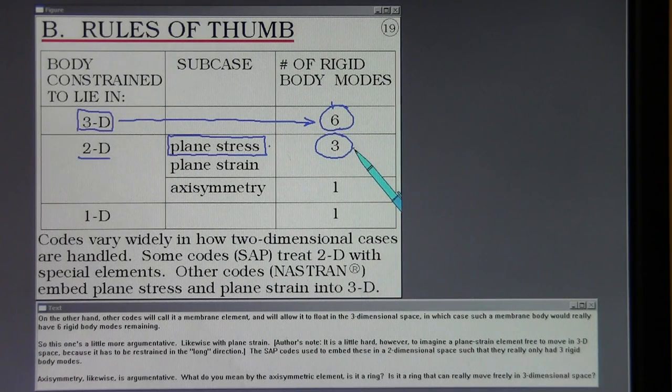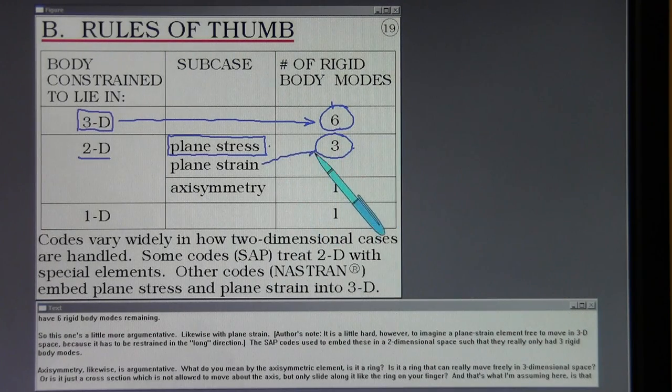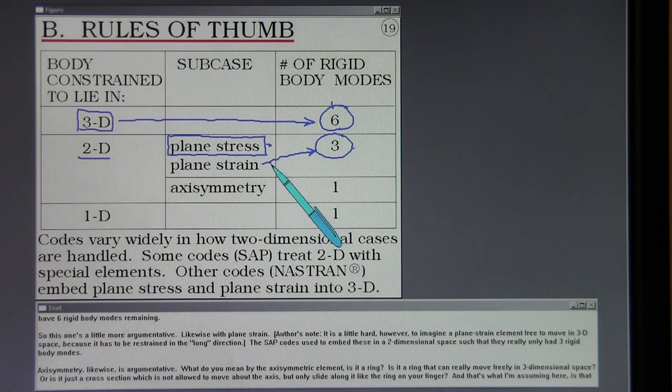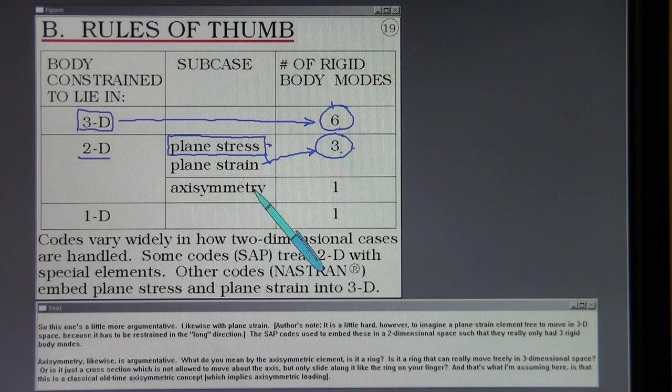So this one is a little more argumentative, likewise with plane strain. The SAP codes used to embed these in a two-dimensional space such that they really only had three rigid body modes.